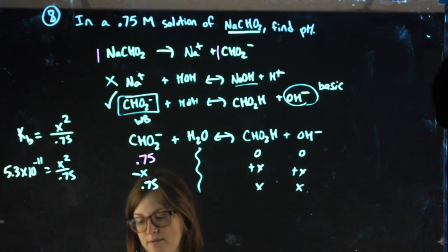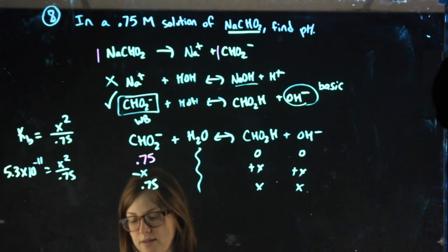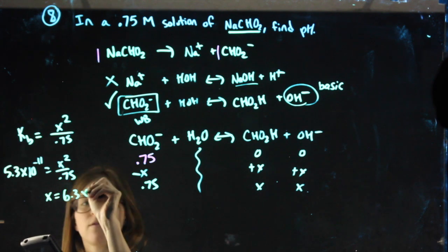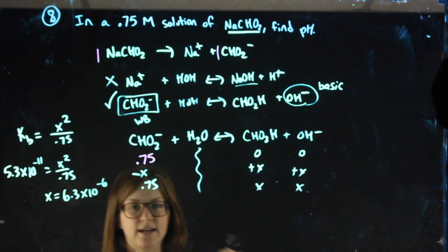0.75 times 5.3 times 10 to the negative 11th. Square root of that, I get an X value of 6.3 times 10 to the negative 6th.